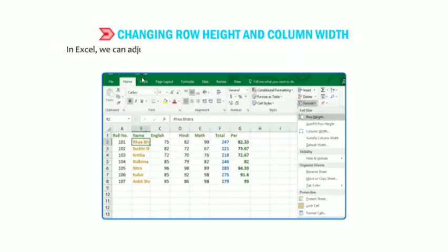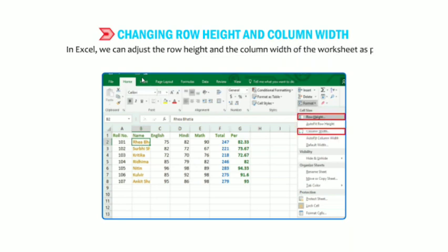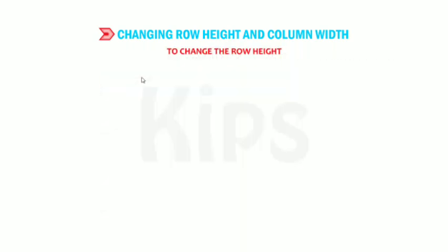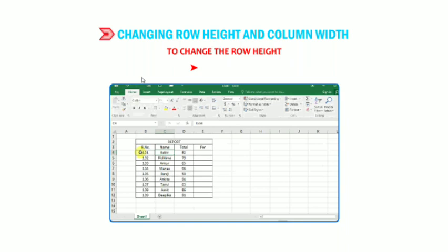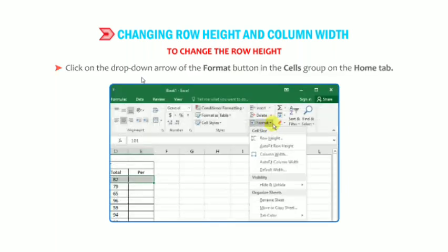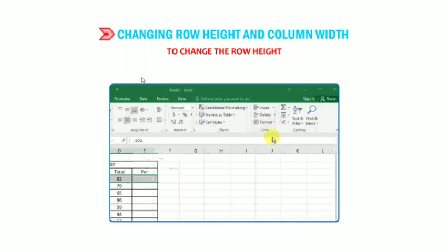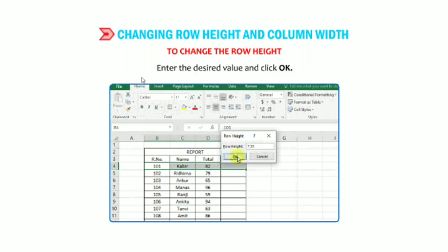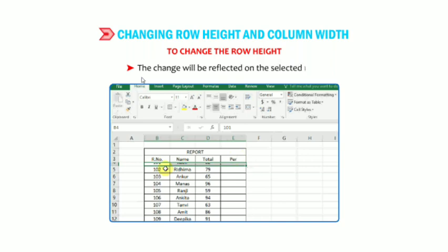Now, changing row height and column width: in Excel you can adjust the row height and column width of the worksheet as per your requirement. The default value for row height and column width is 15 points and 8.43 points respectively. To change the row height, select the row, then click the drop-down arrow of the Format button in the Cells group and click on the Row Height option. The Row Height dialog box will appear — enter the desired value and click OK. The change will be reflected on the selected row.